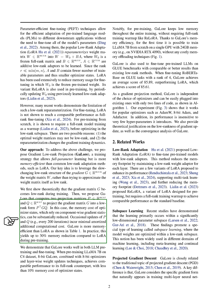GaLore has been shown to achieve up to 30% memory reduction compared to LoRA during pre-training. It works effectively in both LLM pre-training and fine-tuning scenarios. For example, when pre-training LLaMA 7B on a dataset, GaLore combined with certain optimization techniques achieved comparable performance to full-rank methods with significantly lower memory costs. Moreover, GaLore can be easily integrated with existing optimizers and requires minimal additional computational cost.